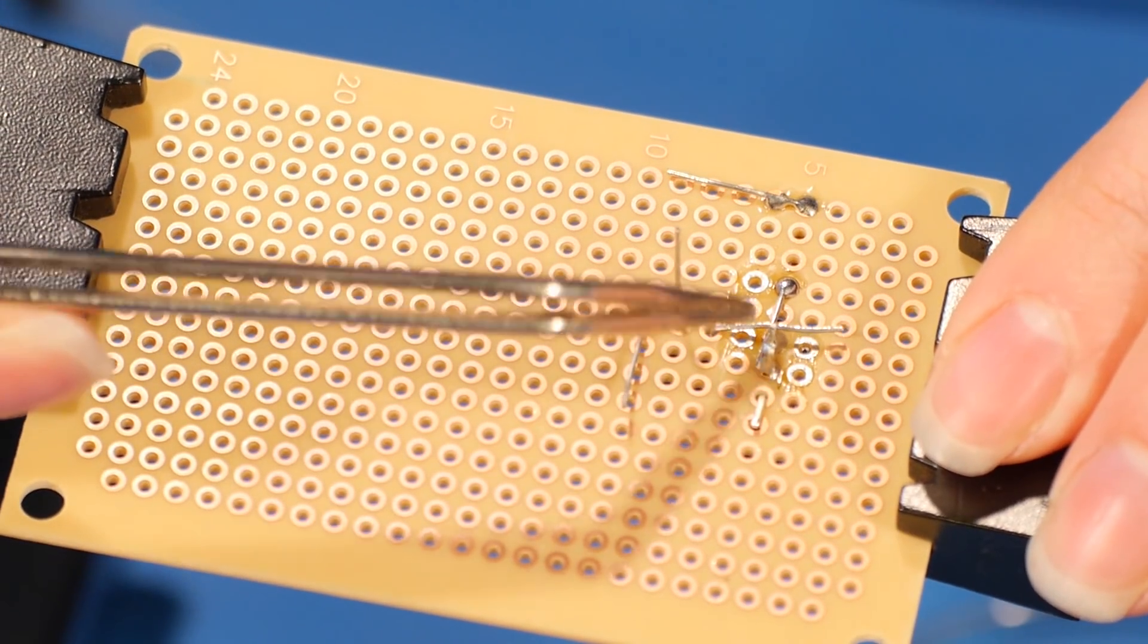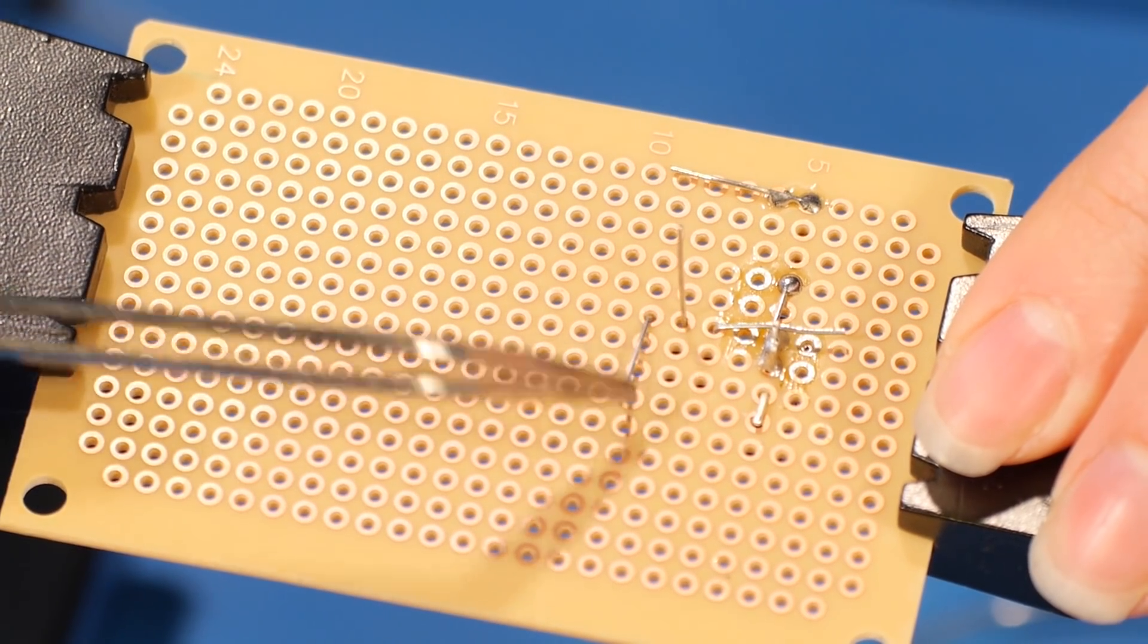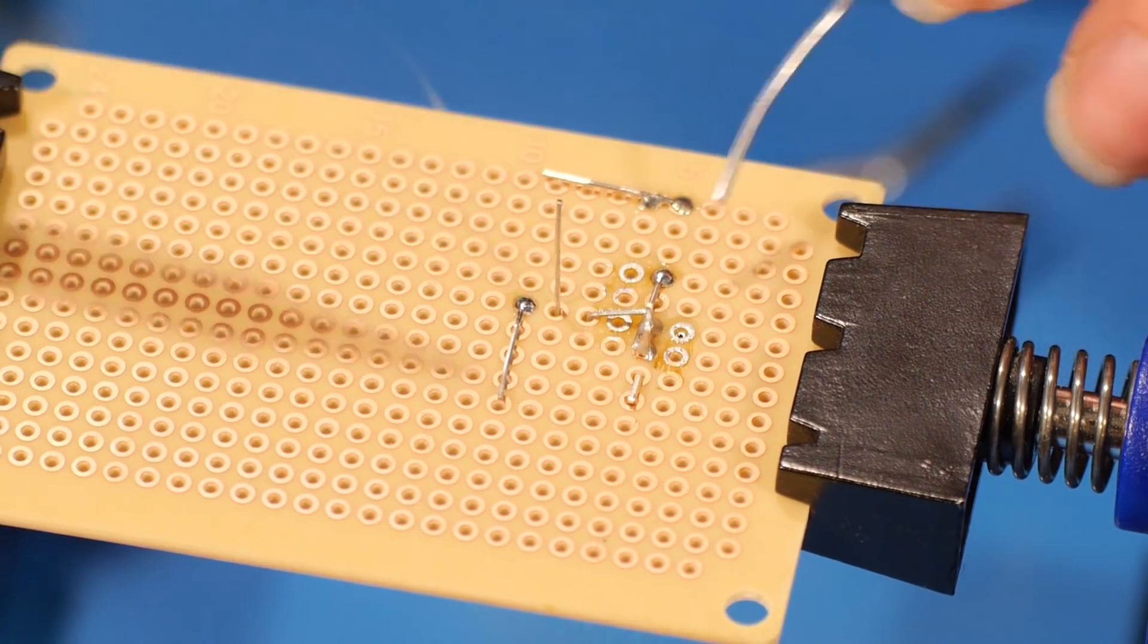So we bent our emitter pin over to go with our switch. And the collector pin is going to go down because we'll eventually have a ground plane down here. I'm going to solder those two pins in place.